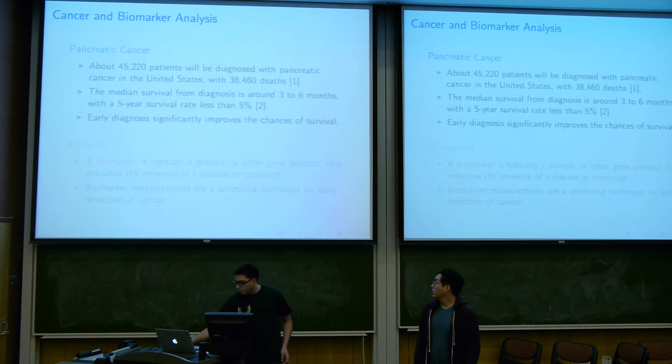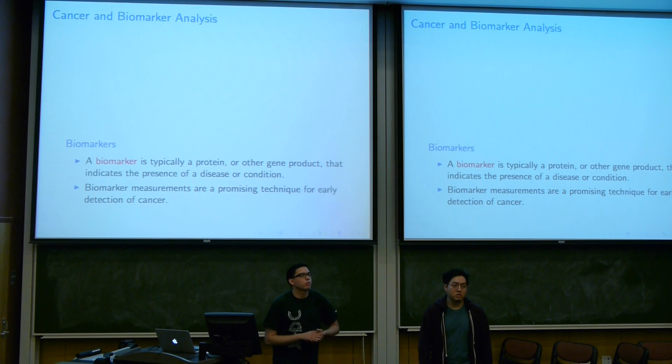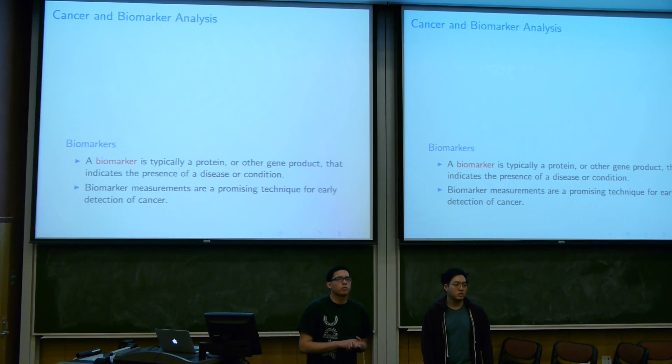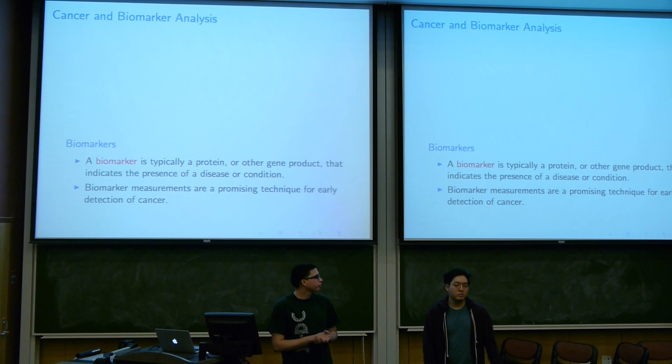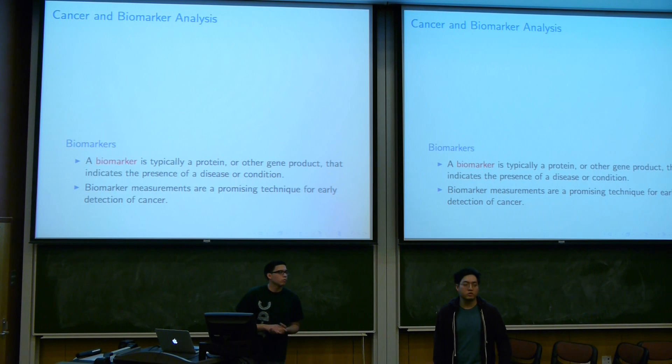Our data set is a biomarker data set. It's a gene product or protein that are found in blood or urine. It's a promising technique because people tend to use MRI or CT scans to detect cancer, but those are expensive and time-consuming, whereas biomarkers are cheap and quick to measure.